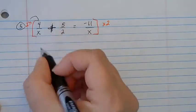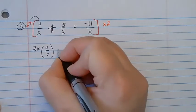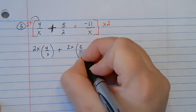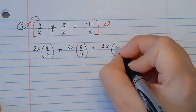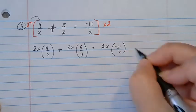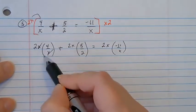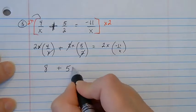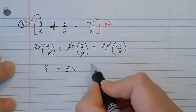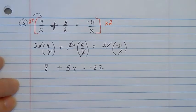When I multiply, I have 2x times 4 over x, plus 2x times 5 halves, equals 2x times negative 11 over x. Watch what happens: the x's cancel and I get 8. Here the 2's cancel and I get 5x. And here the x's cancel and I get negative 22. So by multiplying by the common denominator, I got rid of the entire fraction.